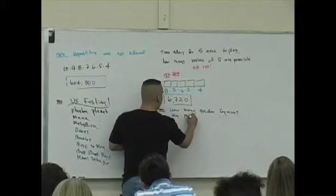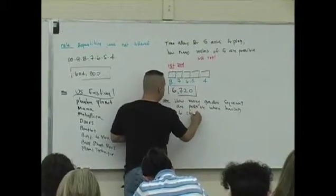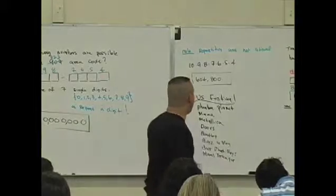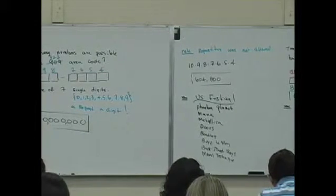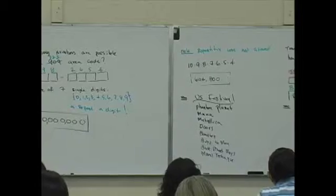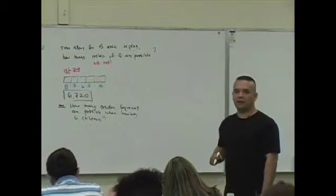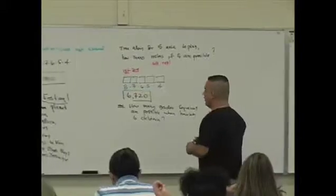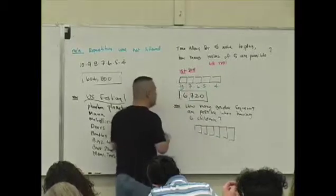How many gender sequences are possible when having six children? Yes. After five? Or possible? Should be a question. Or what? Time allows for five acts to play. Sorry. Okay. What does a gender sequence look like if you have six children? Do you guys know?